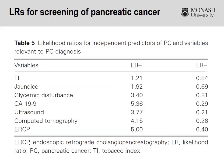Over the next few slides I'll give you an example of how likelihood ratios can be utilised when creating a specific testing algorithm. This is likelihood ratios for pancreatic cancer, looking at different tests you can use: TI — a tobacco index indicating whether or not people smoke — jaundice, glycemic disturbance, a blood test for a cancer antigen, then ultrasound, CT, and endoscopy.